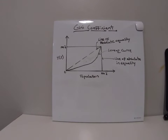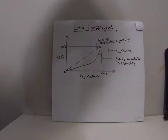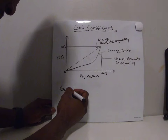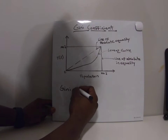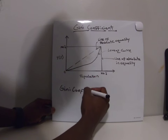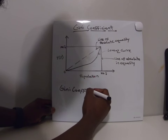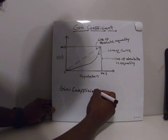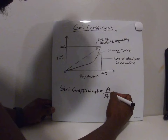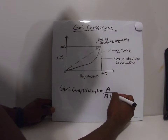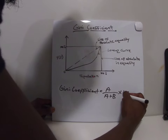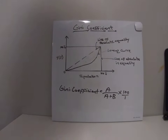The Gini coefficient is calculated using the formula: Gini coefficient equals A over A plus B, multiplied by 100 over 1.